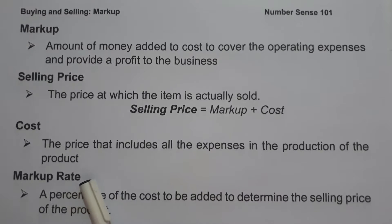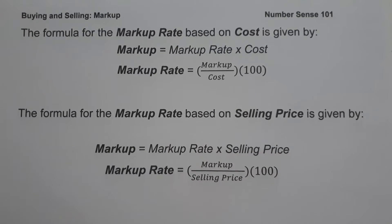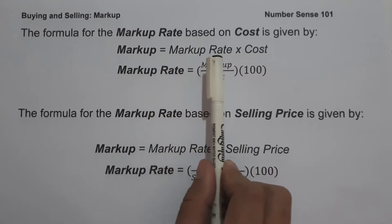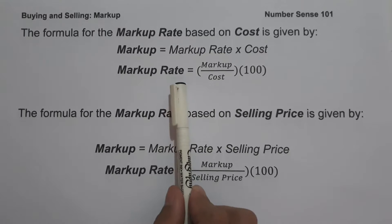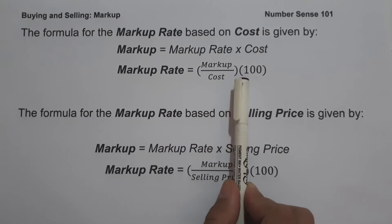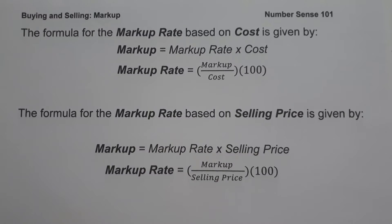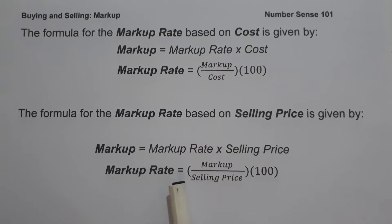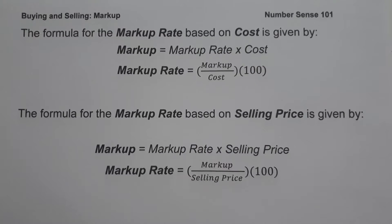And lastly, when we say markup rate, it is a percentage of the cost to be added to determine the selling price of the product. To determine the markup and markup rate based on cost, we use: markup equals markup rate times cost, and markup rate equals markup divided by cost multiplied by 100. To determine the markup and markup rate based on selling price, we use: markup equals markup rate times selling price, and markup rate equals markup divided by selling price times 100. These are the basic concepts you need to remember.